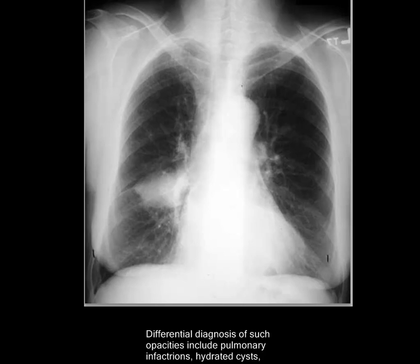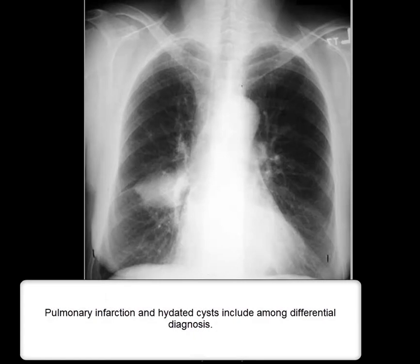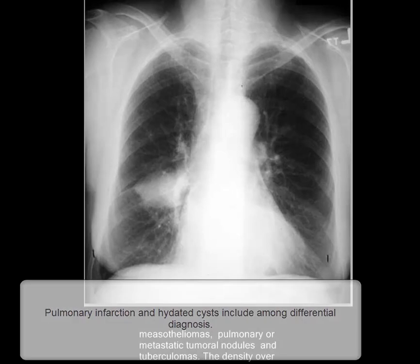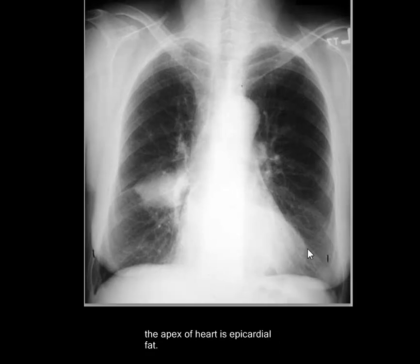Differential diagnosis of such opacities includes pulmonary infarction as number one possibility, hydatid cysts, mesothelioma, pulmonary or metastatic masses, and tuberculomas. This density over the apex is epicardial fat. Thank you very much.